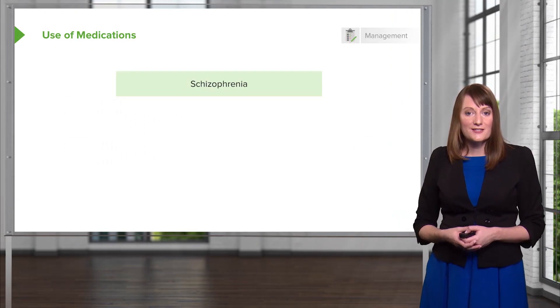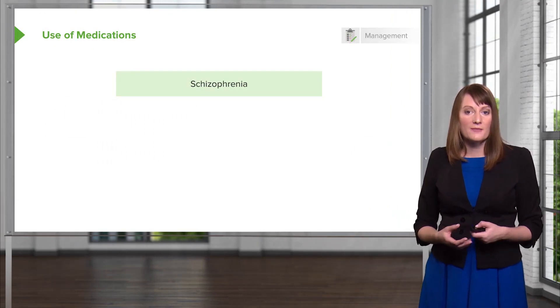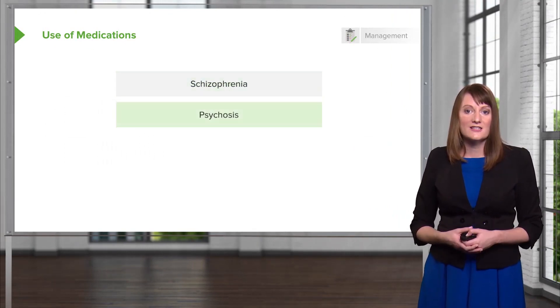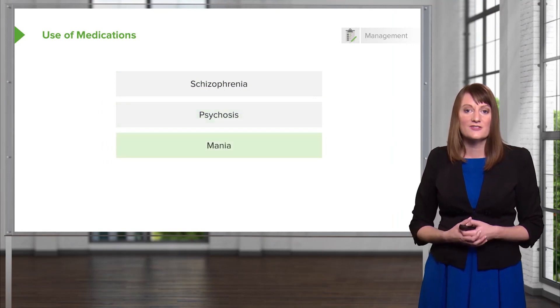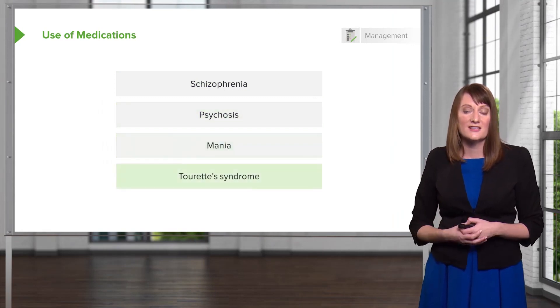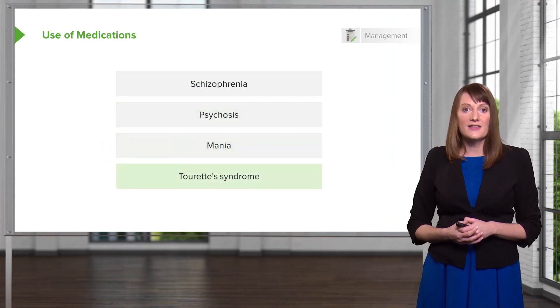There are a lot of different uses for antipsychotic medications. Some are, of course, the primary psychotic disorders. Also mood disorders like mania and depression, and Tourette's syndrome — they can also be helpful there.